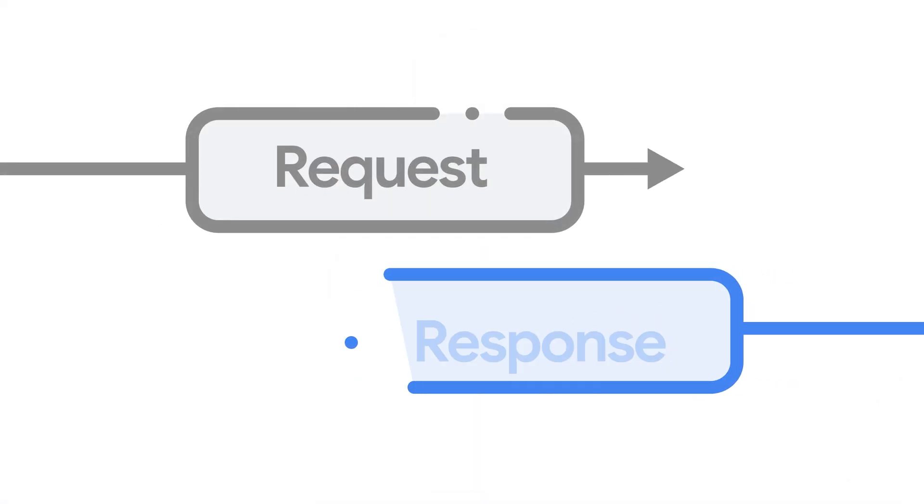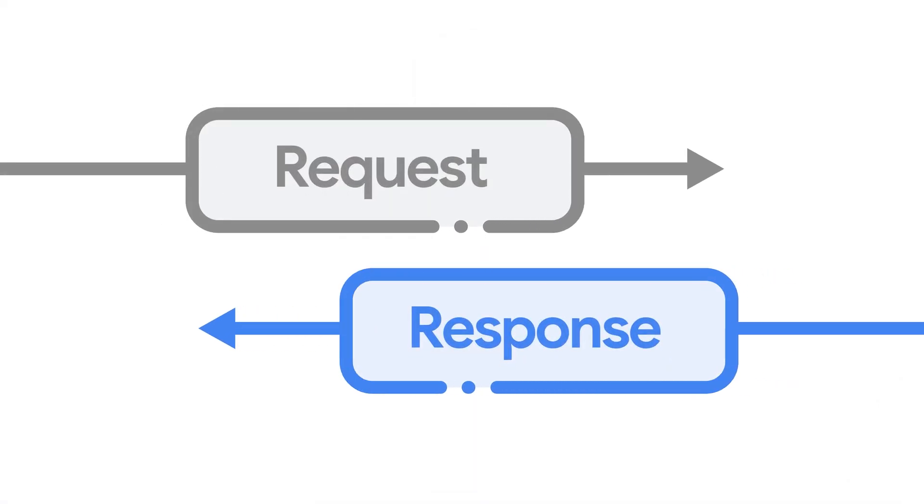I'm Sam Dutton, a developer advocate with the Chrome team, and in this video I'm going to show you how HTTP works for cookies. HTTP is based on a really simple request-response cycle. It's like a conversation between a client — usually a web browser or an app — and a server hosting the resources you're trying to access. HTTP provides a standardized set of rules that allow clients and servers to communicate.